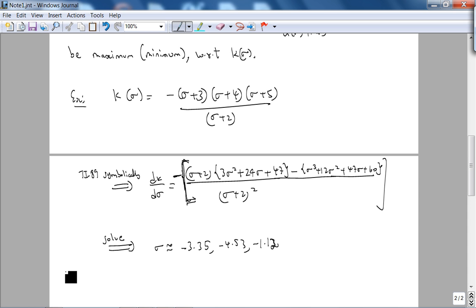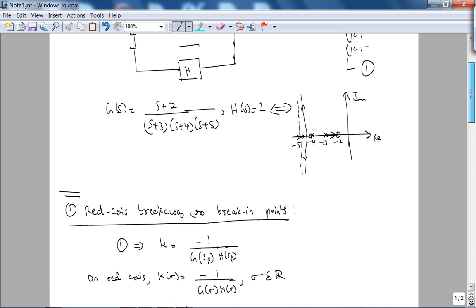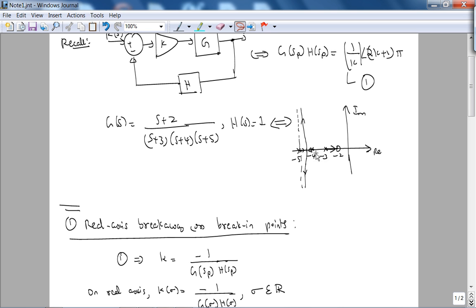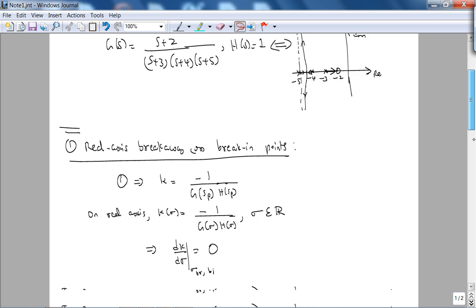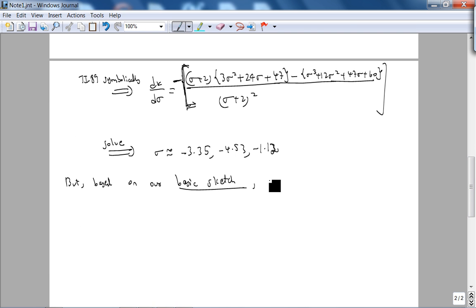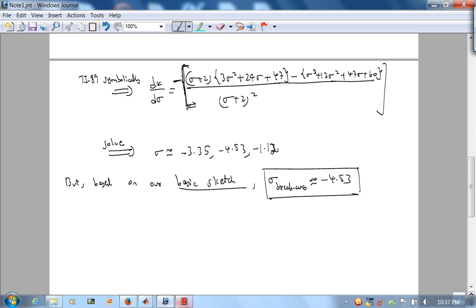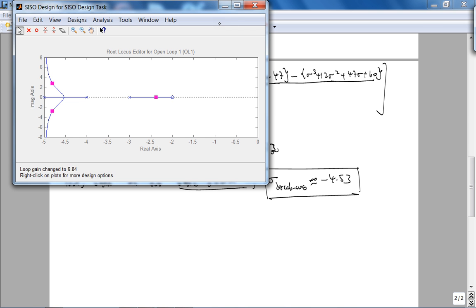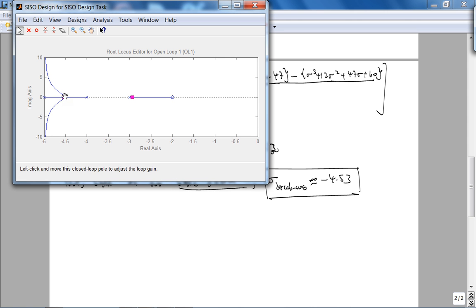But obviously, based on our basic sketch, and this is important, in the sense all these methods should be used logically, you should have an understanding that there is no way the breakaway point is outside the interval -5 to -4. So based on our sketch, sigma breakaway is approximately -4.53. If you noticed the pole location here, you can see it's like -4.5 right there. You just saw that the pole location was -4.53. Very nice method, I like this method.